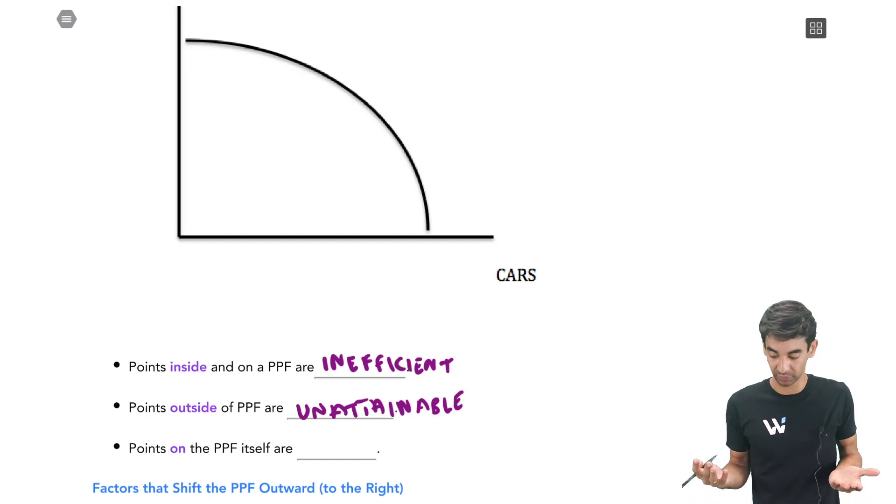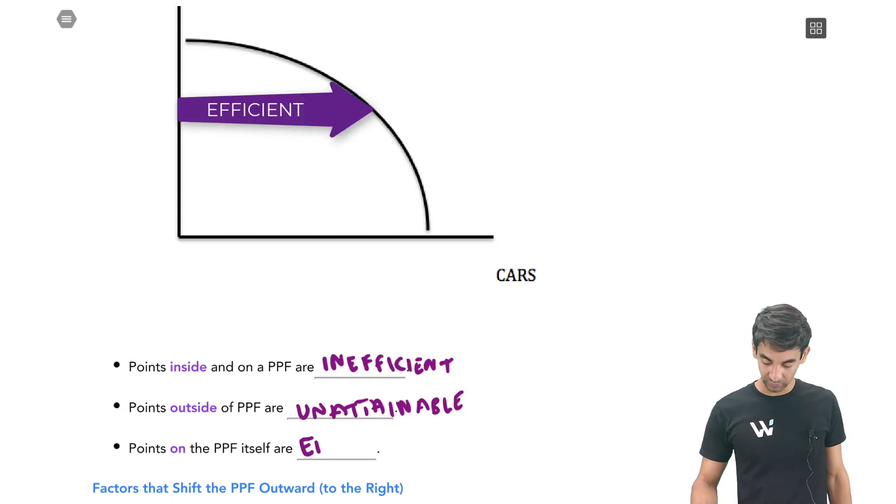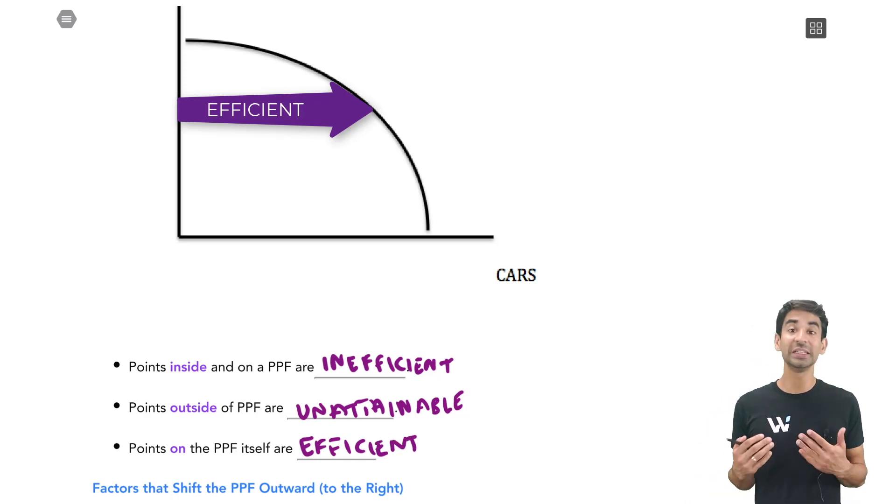And then all the points on the PPF are both possible and efficient. So we'd say on the PPF, that's where you want to be. You want to be at any of the efficient points on the PPF.